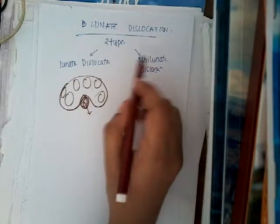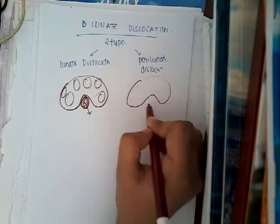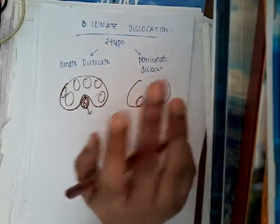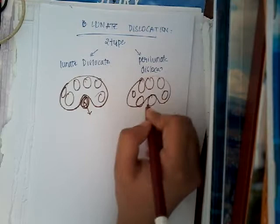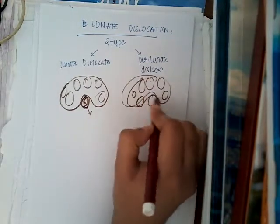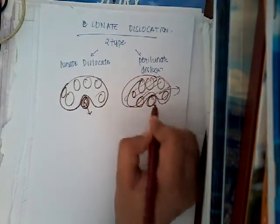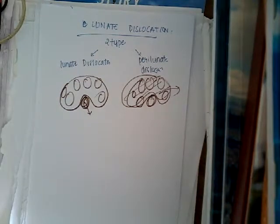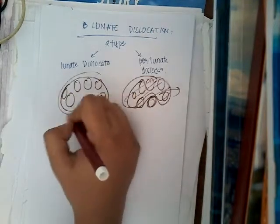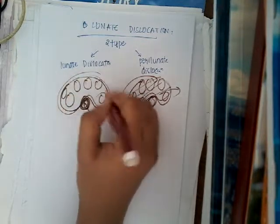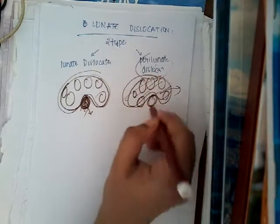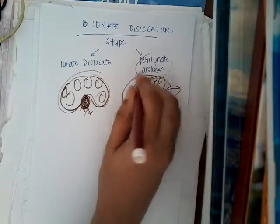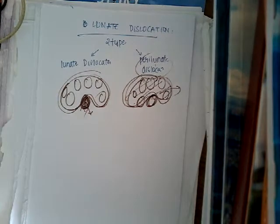In perilunate dislocation, I'm drawing it this way to make it easier to understand. All the surrounding carpal bones will dislocate, but the lunate remains in its position. So that is the main difference: in lunate dislocation the lunate bone dislocates, whereas in perilunate dislocation the lunate stays and the surrounding structures are dislocating.